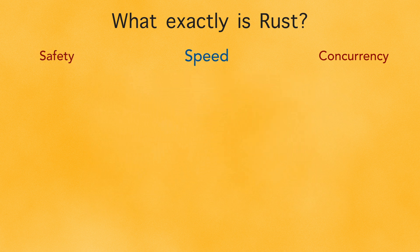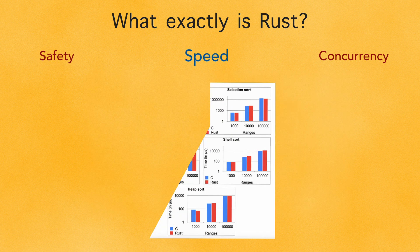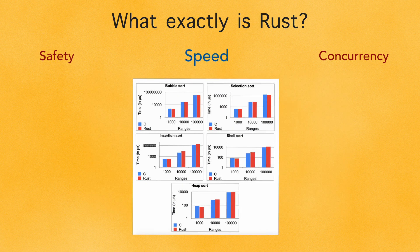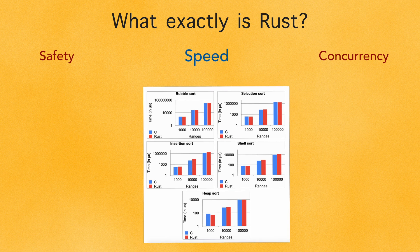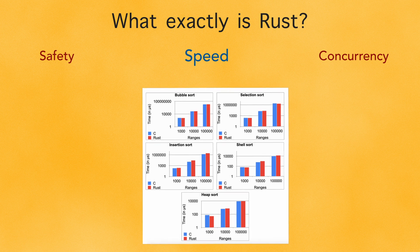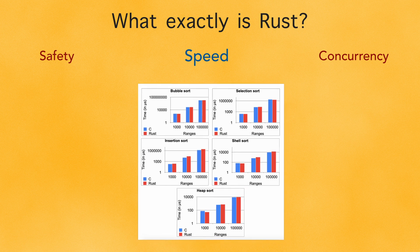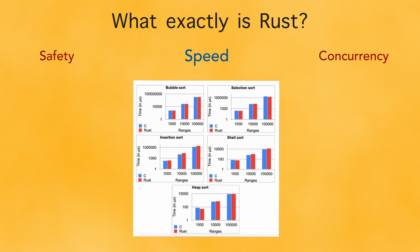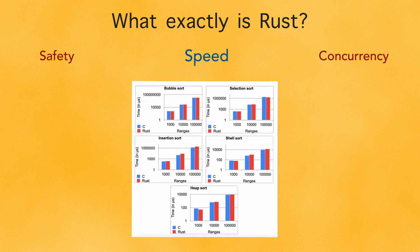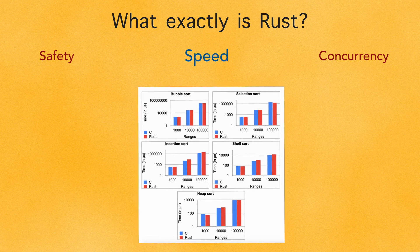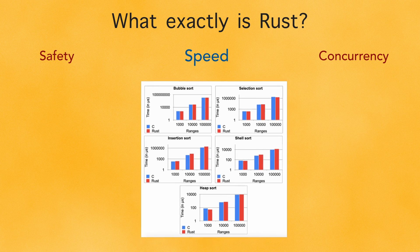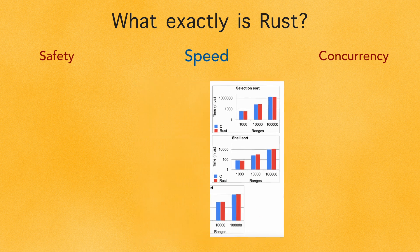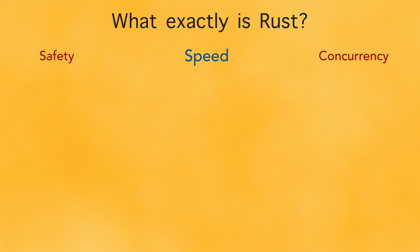Then we have speed. Rust is as close to the metal as it gets. It compiles directly to machine code, so it can be as fast as C and C++, making it ideal for systems programming. This is why Rust is often used for performance-critical applications.